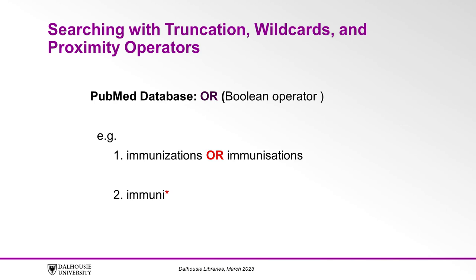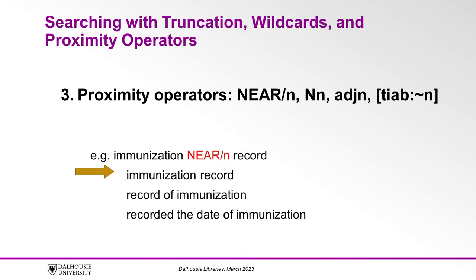Proximity operators, also referred to as adjacency operators, are another way to search, and they help us specify what phrases we want in our search results. For example, if we wanted articles that discussed 'immunization record', we might also want results that mention phrases like 'record of immunization' or 'recorded date of immunization'. With proximity operators, we can do that. Embase, CINAHL, and Ovid Medline allow flexible use of proximity operators that find keywords within a certain number of spaces between each other, in any order.